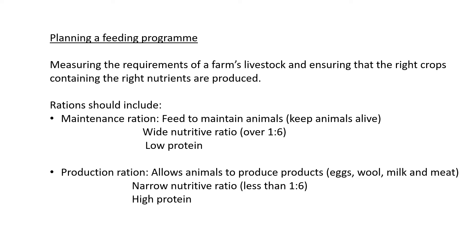For your production ration, this allows animals to produce products like eggs, wool, milk, and meat—things the farmer would like to sell. When the animal is producing these products, we usually give them something with a narrow nutritive ratio, less than 1:6.